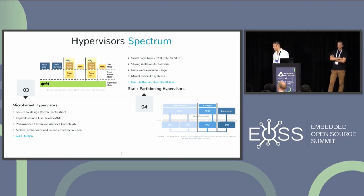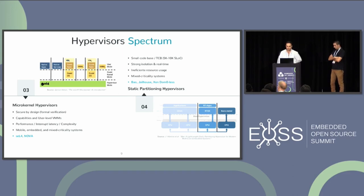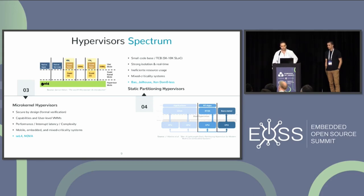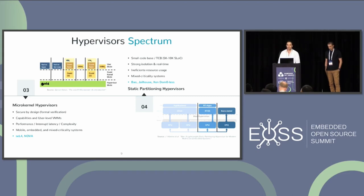On the right side of the spectrum, we have static partitioning hypervisors. The goal is a very tiny code base — typically a few kilobytes of software lines of code — providing strong isolation and real-time guarantees. They target mixed criticality and IoT applications with strict real-time requirements. The only problem is typically an inefficient resource use, since you partition all your system at design time. Examples are BAU, JAILHOUSE, and XenDom0-less.